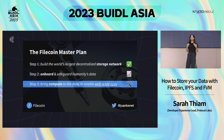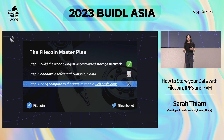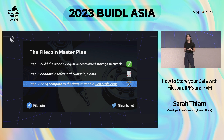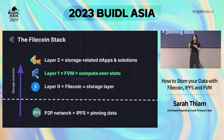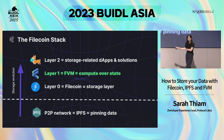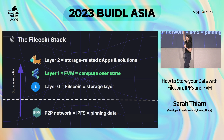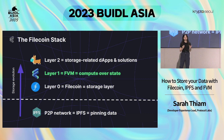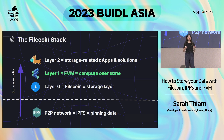Step three is where we think about bringing computation to the data. If you are familiar with Web2 AWS servers — where you have a database, an ability to build applications and write logic, and then serve it through a gateway to your client — we hope to create something like that for Web3 to revolutionize the ecosystem. That's where FVM is going to make a huge difference and enable a lot more solutions to be built.